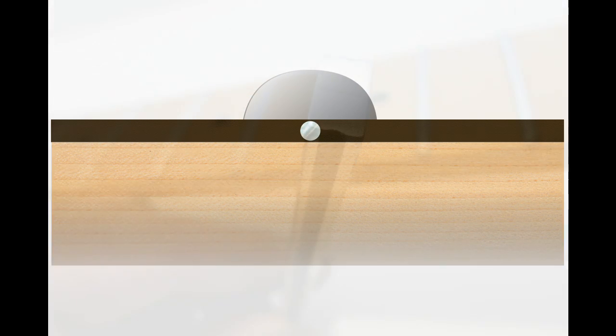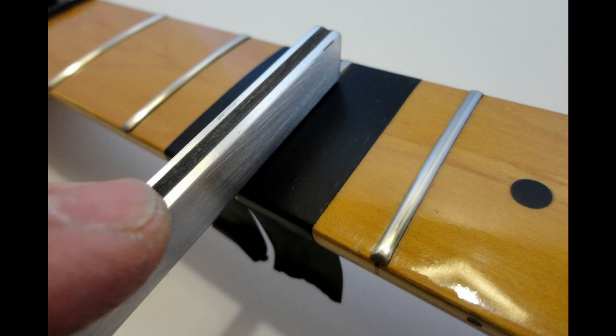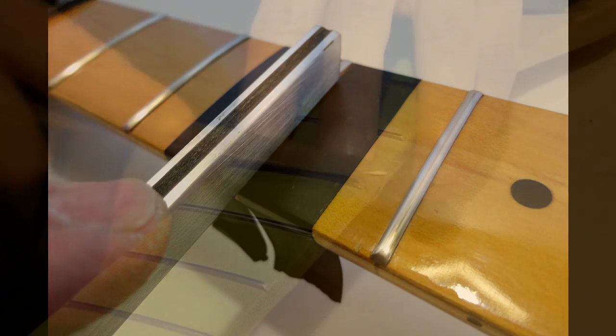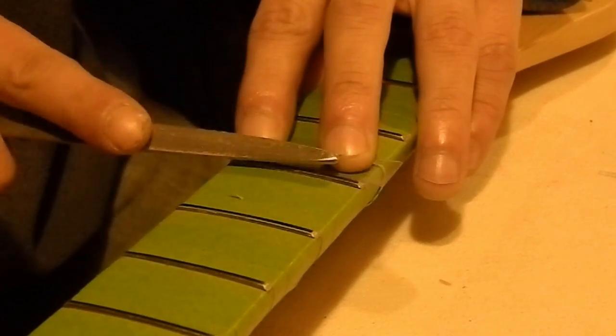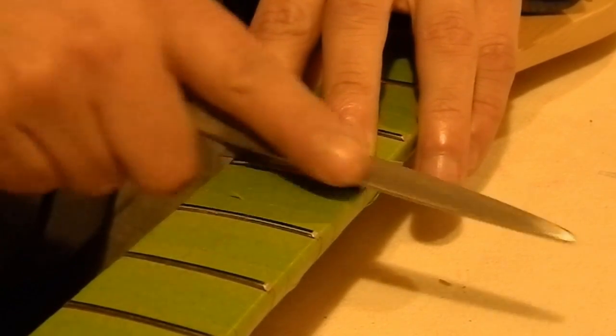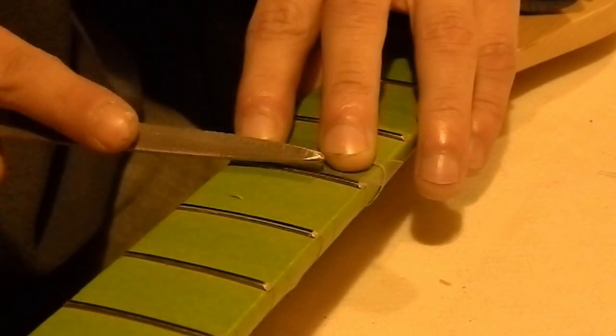Normally I would use a diamond fret crowning file, but I'm going to do it with a triangular file today just to show that you don't need the fancy tools to get a good result. So we're going to tape up the fingerboard and then get on with that.